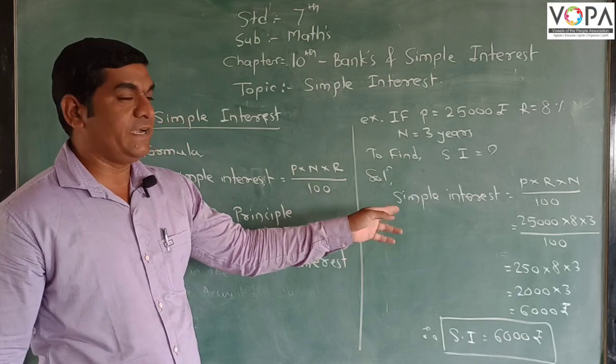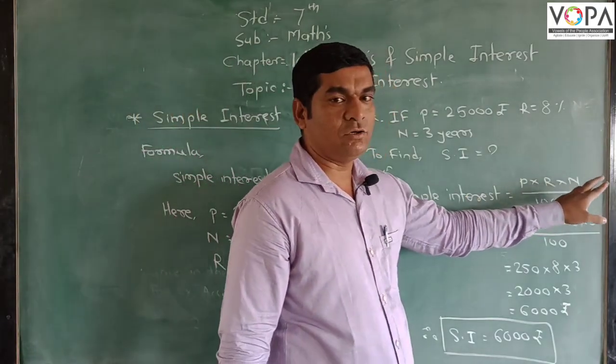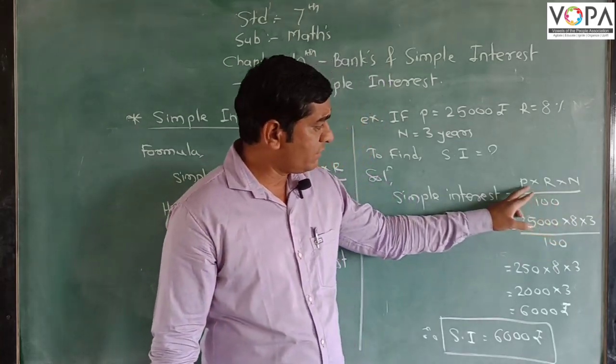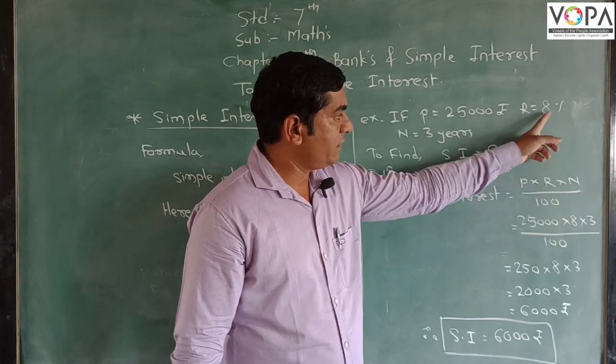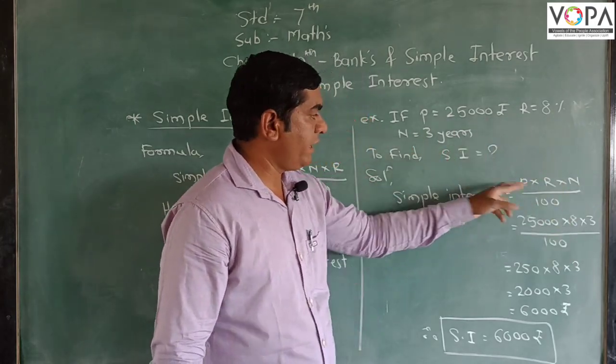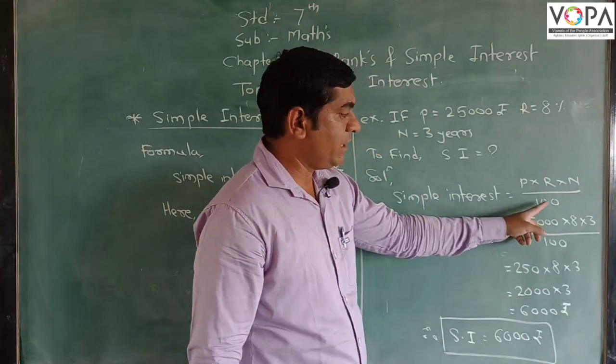By the formula. Simple Interest is equal to P into A into R upon 100. So what is the value P? 25,000. R, rate, 8. And A, number of years, 3. And divide by 100.